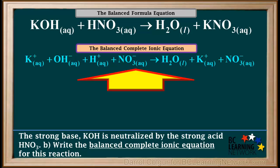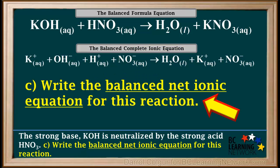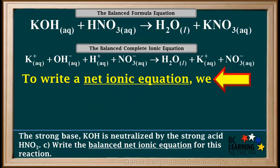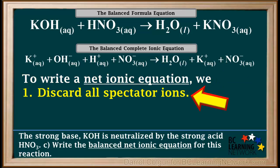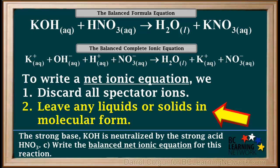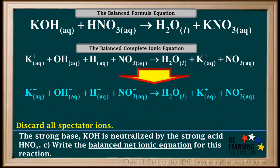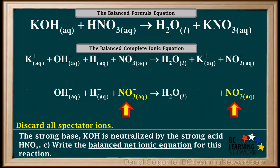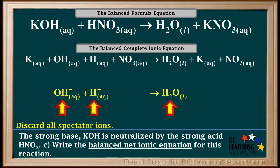At this point, you should pause the video and confirm that all atoms and charges are balanced. Part C of this question is to write the balanced net ionic equation for this reaction. In order to write a net ionic equation from the complete ionic equation, we start by discarding all spectator ions — these are ions that are identical on both sides of the complete ionic equation. We'll rewrite the complete ionic equation and identify and discard the spectator ions. Notice K+ aqueous is identical on both sides, so it is a spectator ion and we discard it. Notice NO3− aqueous is also identical on both sides, so it is also a spectator ion and we discard it. All we're left with is OH− aqueous plus H+ aqueous forming H2O.